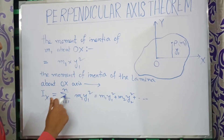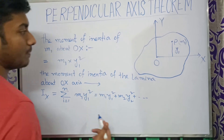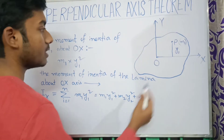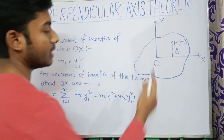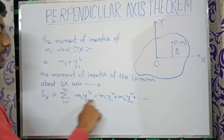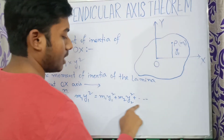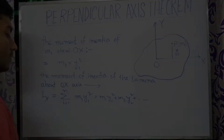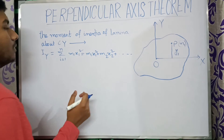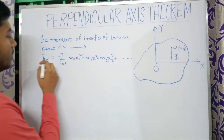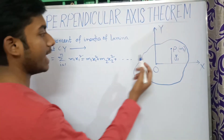So the moment of inertia of the lamina about Ox will be Ix = summation over i = 1 to n of mᵢ·yᵢ², considering all the masses over the whole lamina. Similarly, the moment of inertia of the lamina about Oy will be Iy = summation over i = 1 to n of mᵢ·xᵢ².